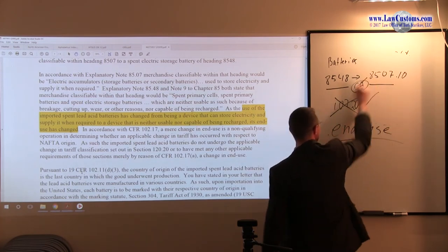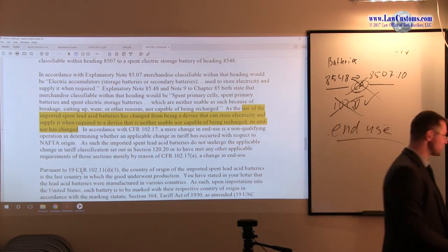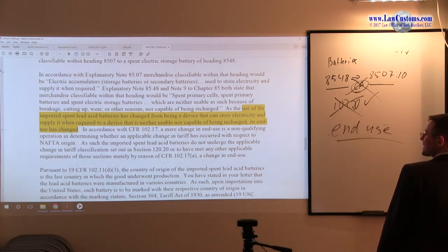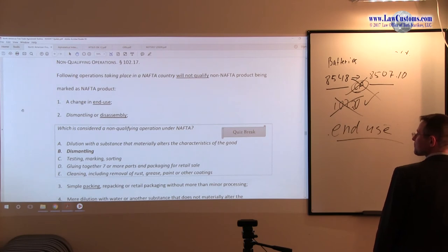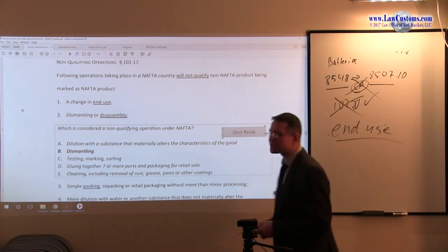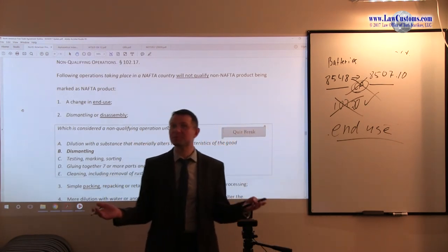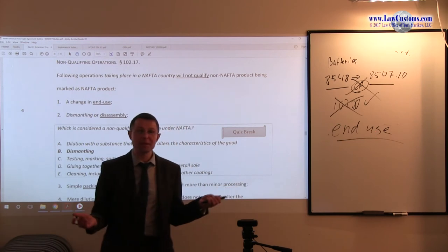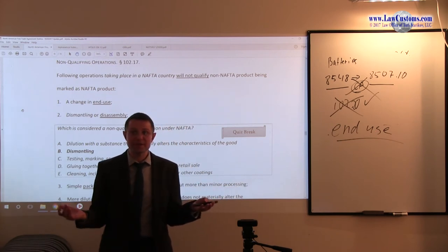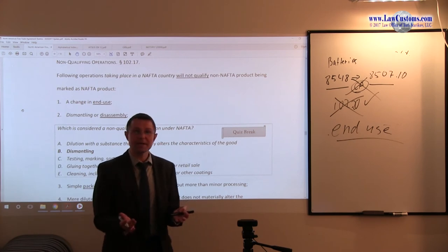So change in end use kills this provision. So no NAFTA for this one, because it's merely a change in end use. So this is the tricky interplay between the 102.17 section and 102.20. Because under 102.20 it may look good, but if the end use has changed and nothing else has changed, then it doesn't matter.